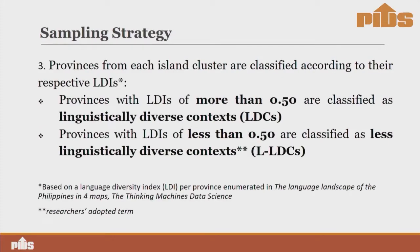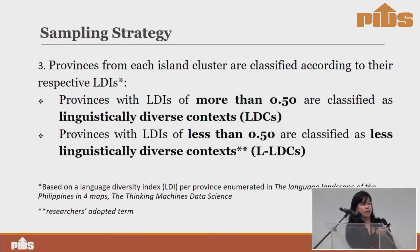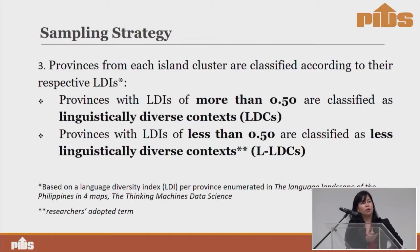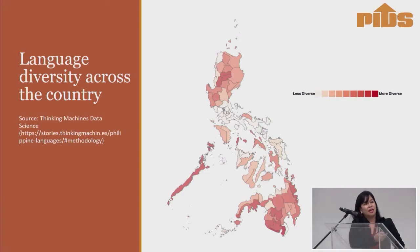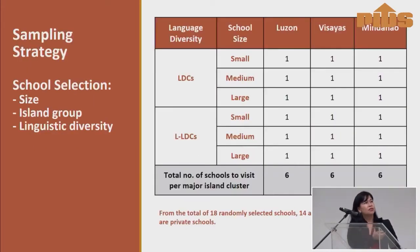We selected provinces from each island cluster — Luzon, Visayas, and Mindanao — by looking at their respective LDIs, taken from Thinking Machines Data Science based on a language diversity index per province enumerated in the language landscape of the Philippines in four maps. Provinces with more than 0.5 were classified as linguistically diverse contexts and less than that as LLDCs. The more colorful the visual map, the more diverse the province.